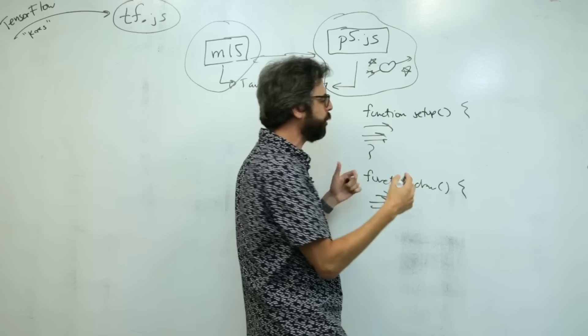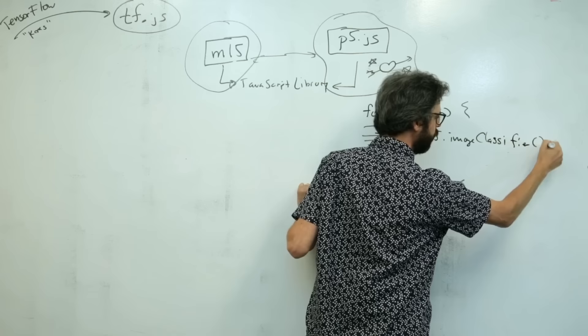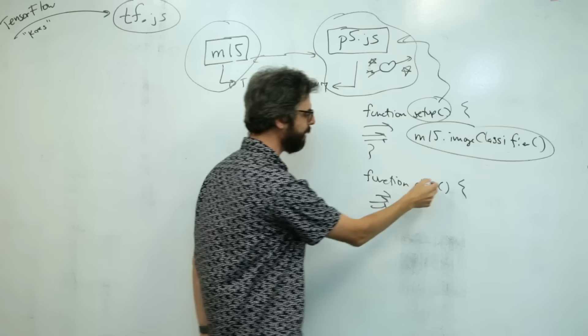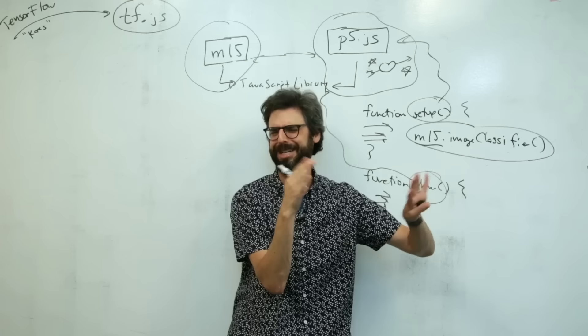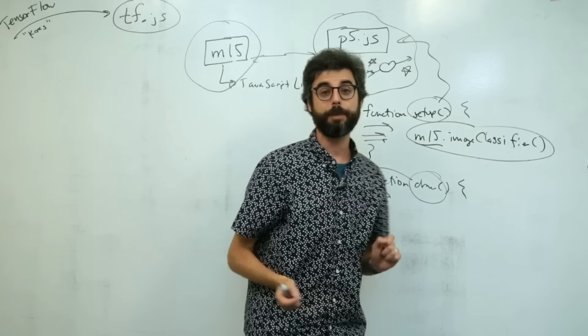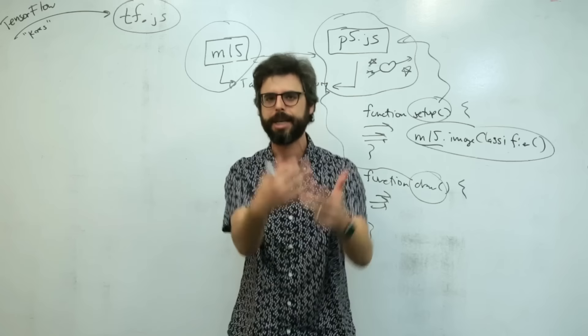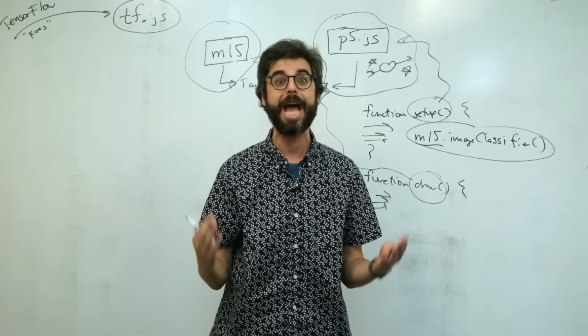So one of the things you could do in p5, is you can write a function called setup. And any code that you put in setup executes the moment the program starts. You can write a function called draw. And any code that you put in draw happens in a loop over and over again. This is a standard kind of design pattern for writing a program that generates an animation, like a game or a piece of interactive art.